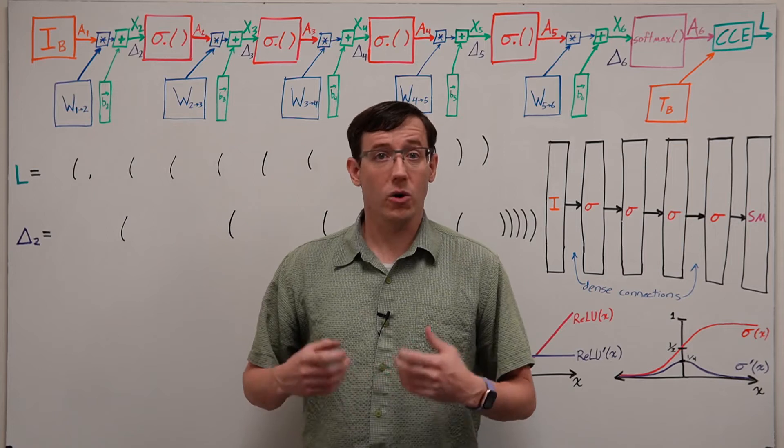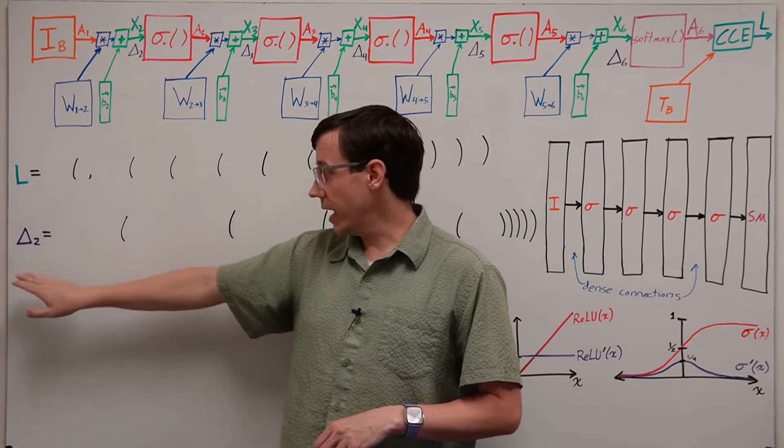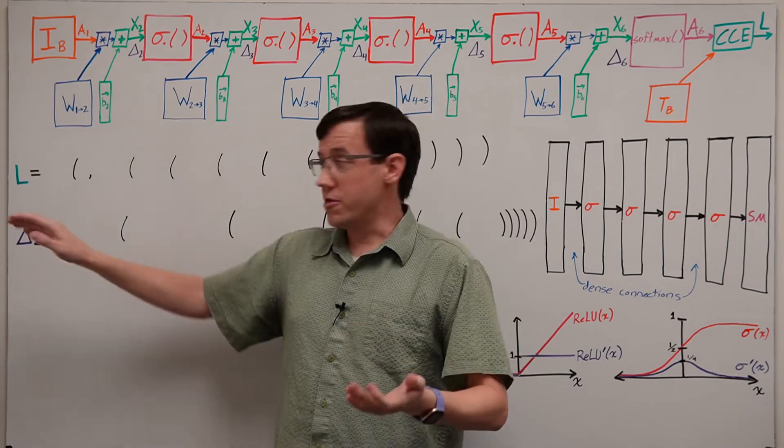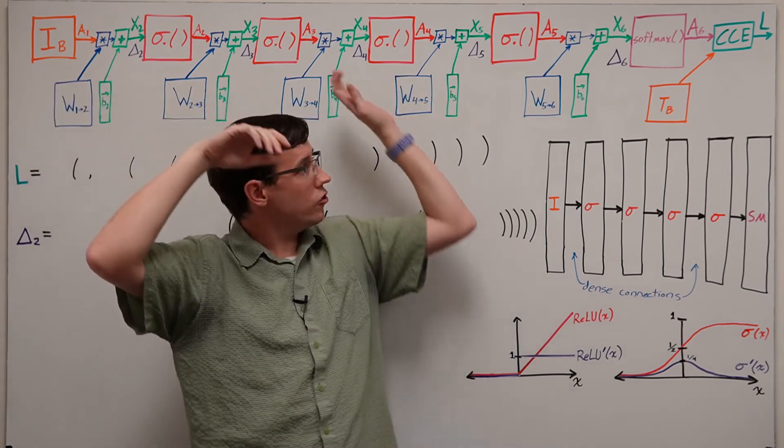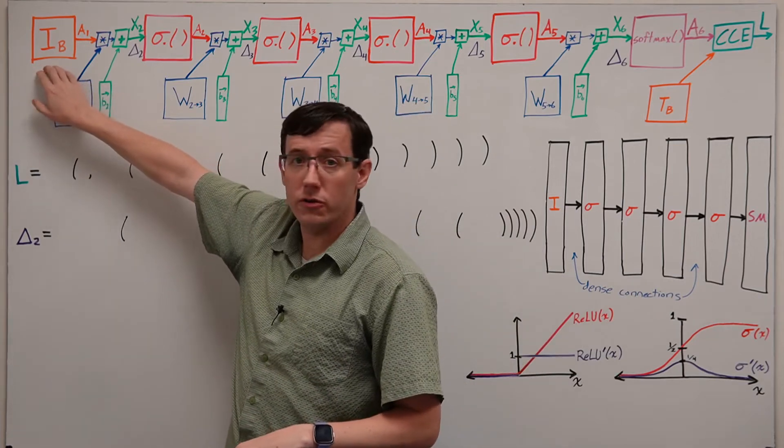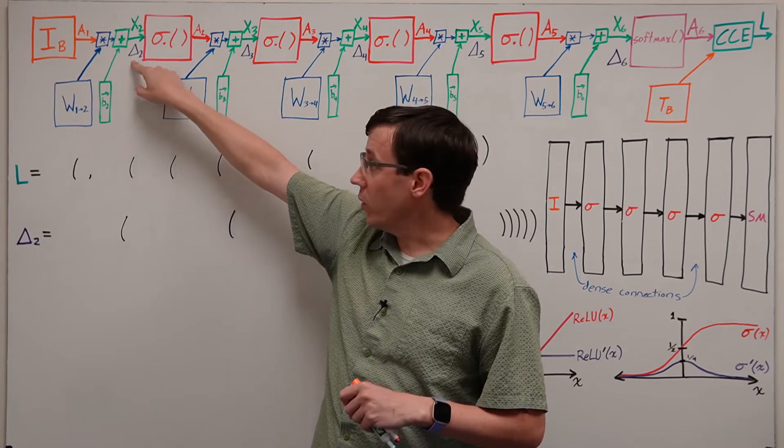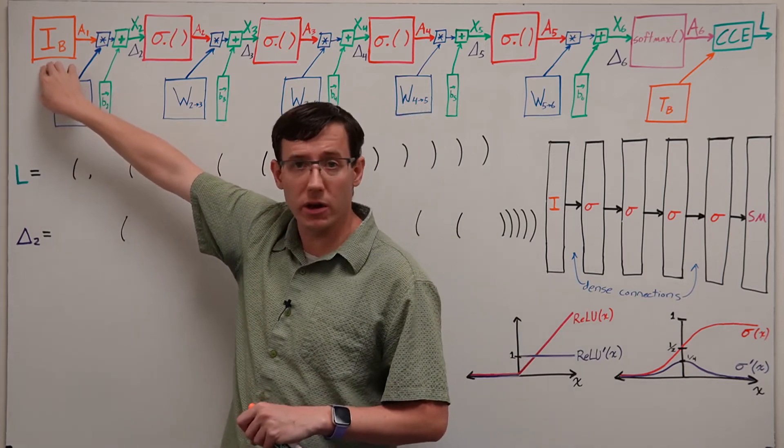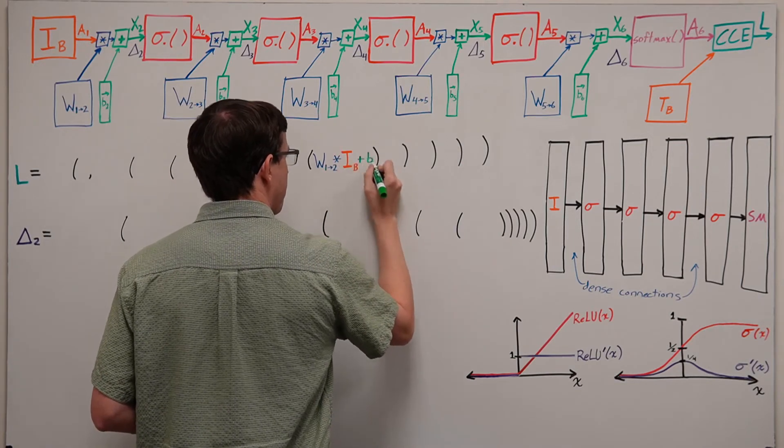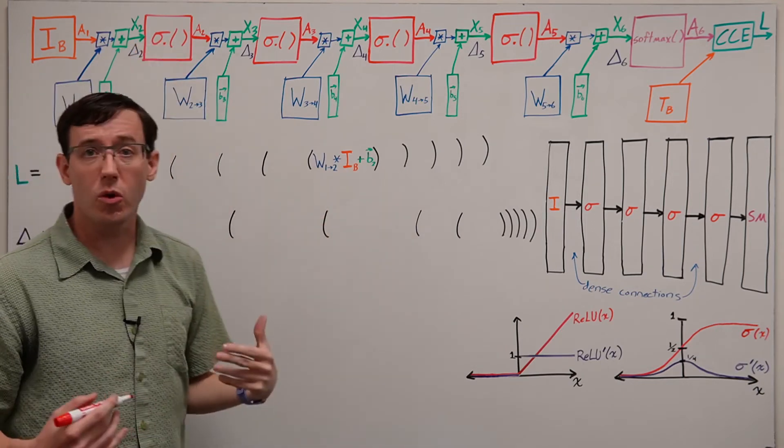But yet another way to think about our computations during training would be to write out mathematical expressions for the loss and for the deltas that we will use to perform our gradient descent updates. The loss results from this entire chain of computations through the graph, and so our functions start from our first matrix multiplication with the input batch. To get our inputs for the first hidden layer, we multiply the weight matrix by the input batch matrix and add the bias. That weighted sum then becomes the input to the first hidden layer's sigmoid activation function.